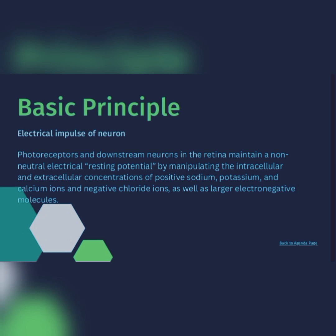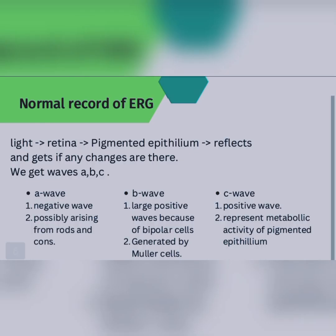Normally, an ERG records its value as you can see. The light falls into the retina, into the pigmented epithelium, and it reflects and detects if any changes are there. As the recording, we get three waves: A wave, B wave, and C wave. A wave is a negative wave, possibly arising from rods and cones. B wave is a large positive wave because of bipolar cells and is generated by Mueller cells. C wave is a positive wave representing metabolic activity of the pigmented epithelium.